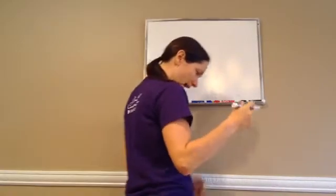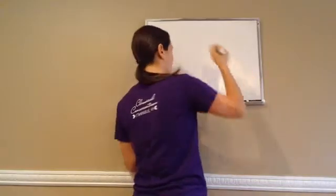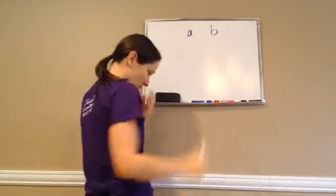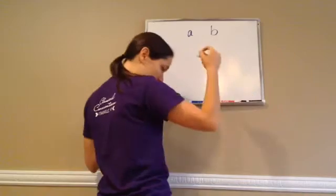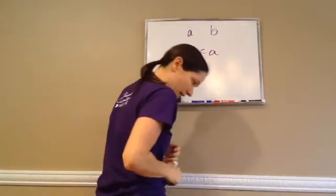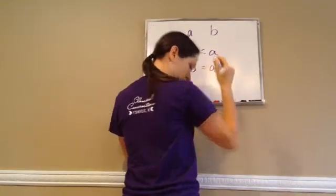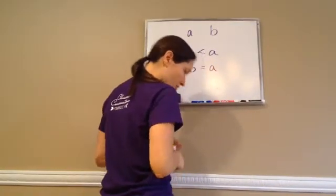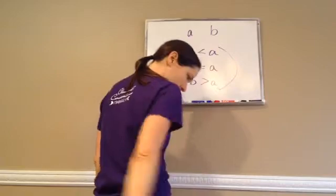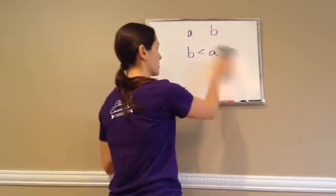Let's talk about the Trichotomy Axiom. All that is saying is, if I had two numbers — the first number A and the second number B — there are three possibilities: B is less than A, B equals A, or B is greater than A. This is called the Trichotomy Axiom.